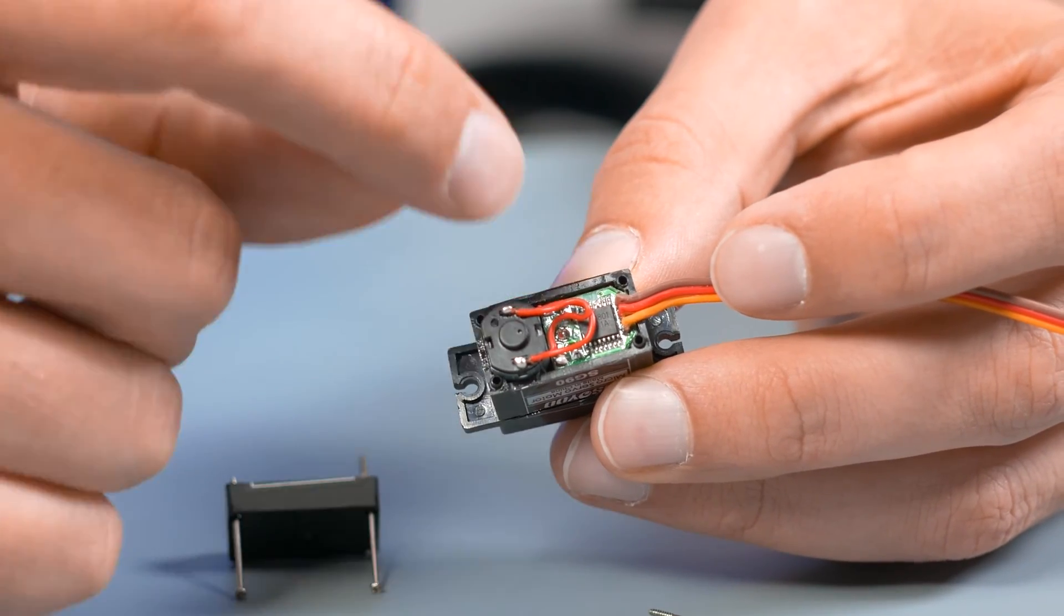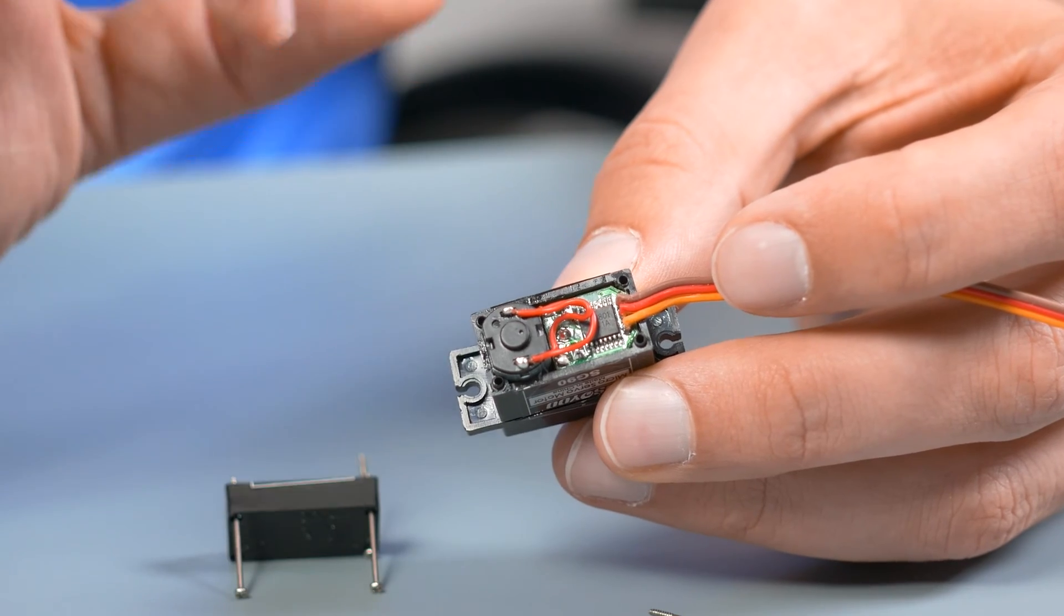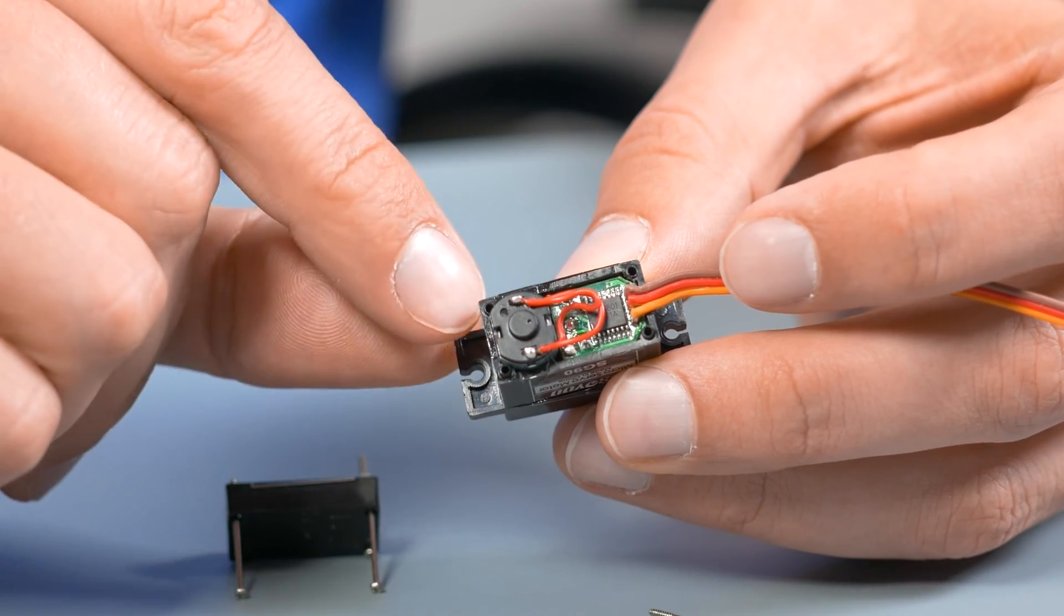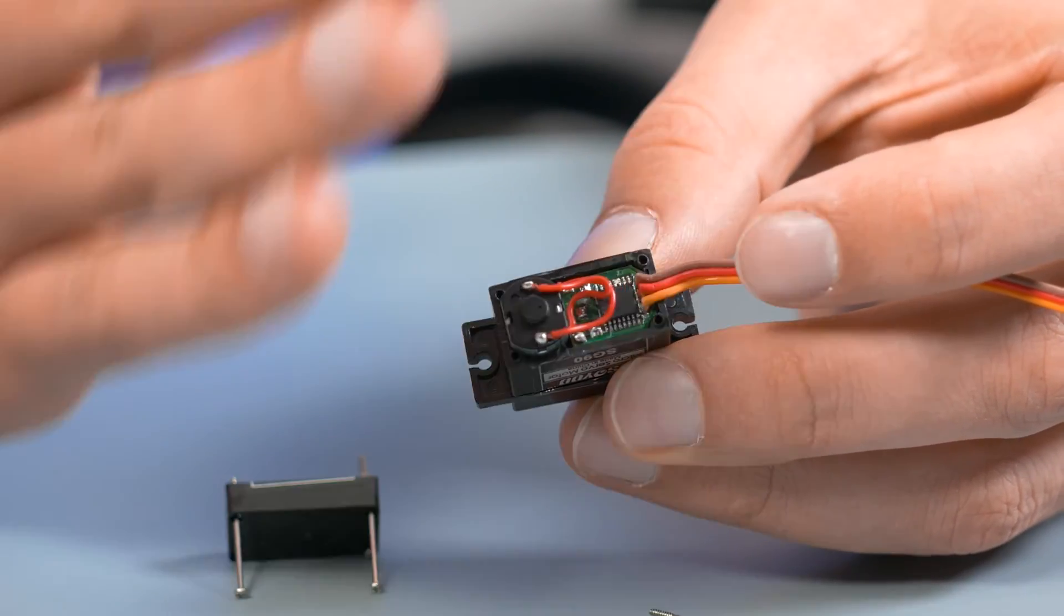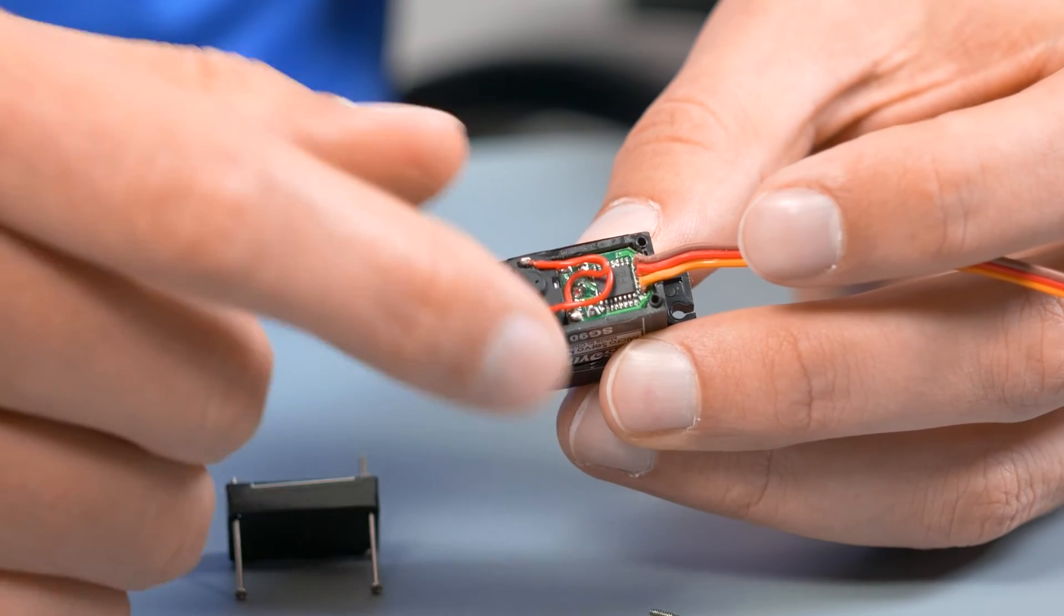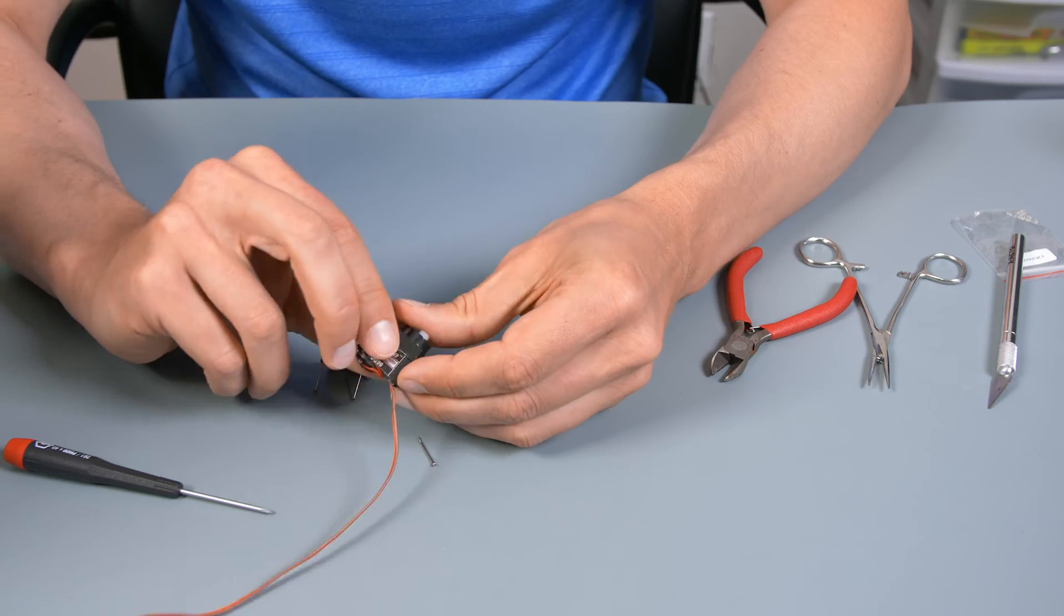So what we're going to have to do is we're going to have to make some modifications to that board to change the logic so that it is getting the same signal, even though there is actually another signal being produced from the potentiometer. So let's come back to that.